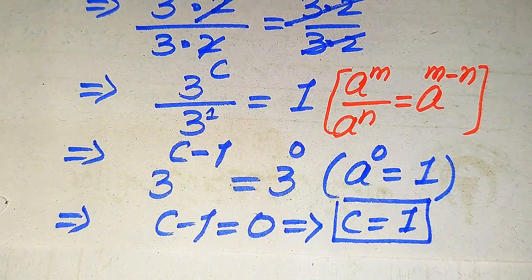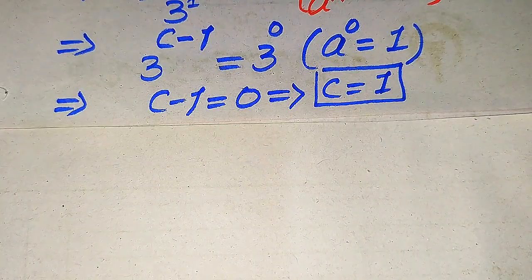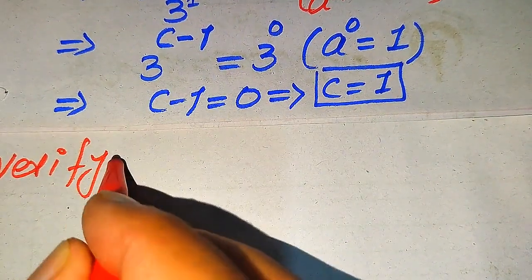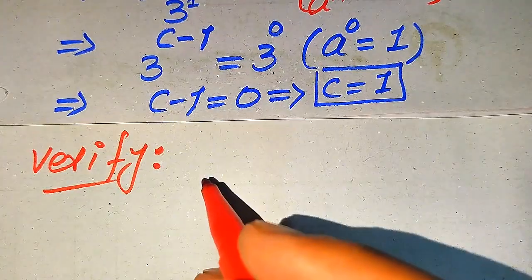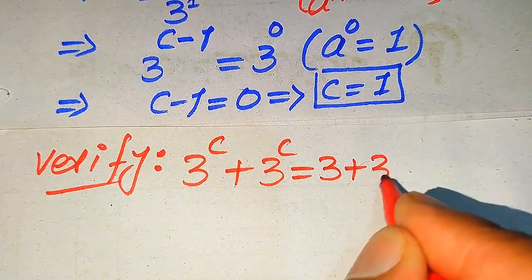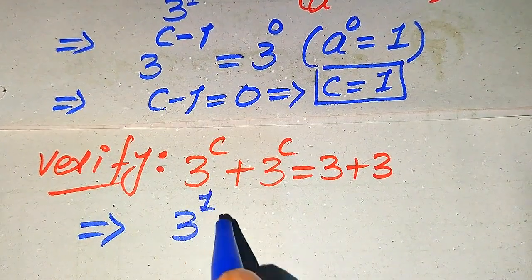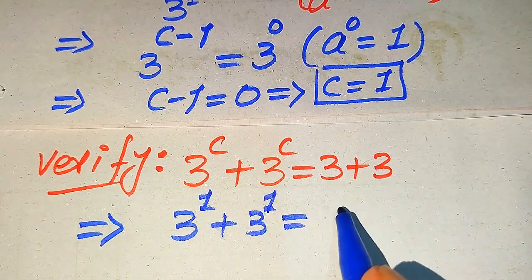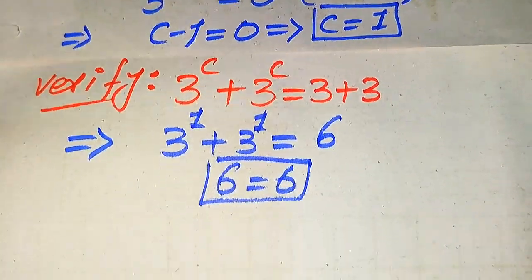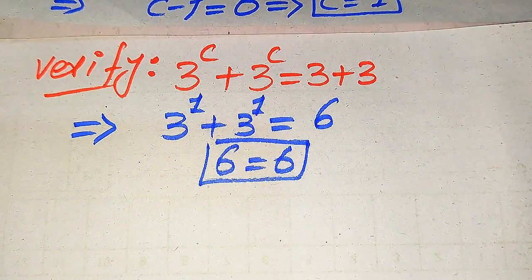So in the second method we again get C equals 1. Now we verify this value by substituting C equals 1 into the given equation: 3 to the power of C plus 3 to the power of C equals 3 plus 3. Substituting gives 3 to the power of 1 plus 3 to the power of 1, which is 3 plus 3 equals 6, and the right hand side is also 6. This confirms that C equals 1 satisfies the equation and is our final answer. Thank you for watching — please subscribe for more videos.